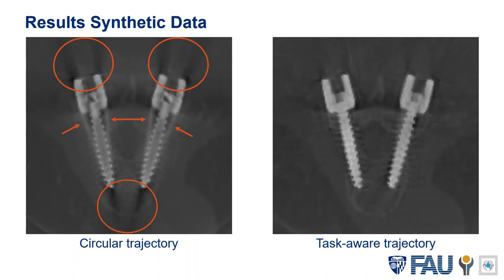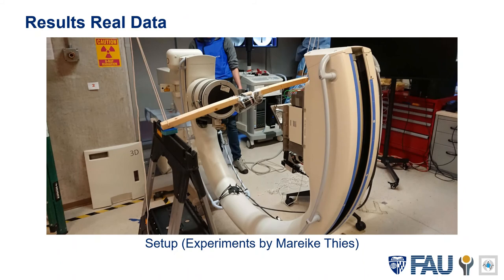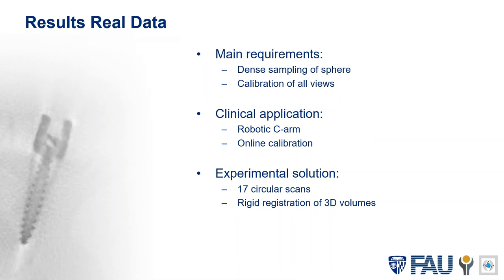What matters in the end are results on real data. We therefore built a semi-anthropomorphic phantom from ballistic gel and screws, as shown in the image here. And I want to thank Marijke Tees for running all of those experiments. Moving to real data experiments brings some more requirements. A robotic C-arm can be used to acquire images at any location on the sphere, and an online calibration algorithm could be used for calibrating the views. In our experimental setup, we acquire 17 circular scans to simulate sampling of the complete sphere, and we use rigid registration between the reconstructed 3D volumes from the circular scans to get calibration between all X-ray projections.